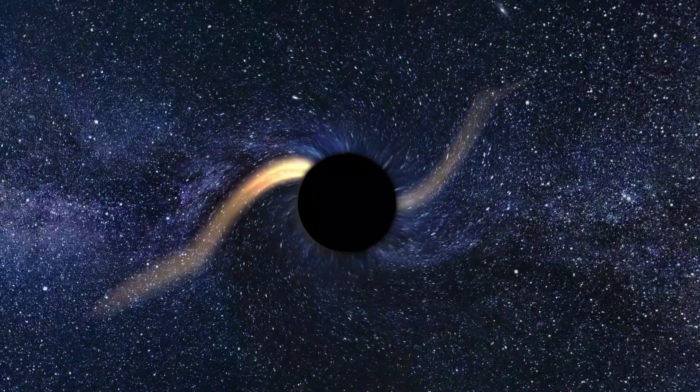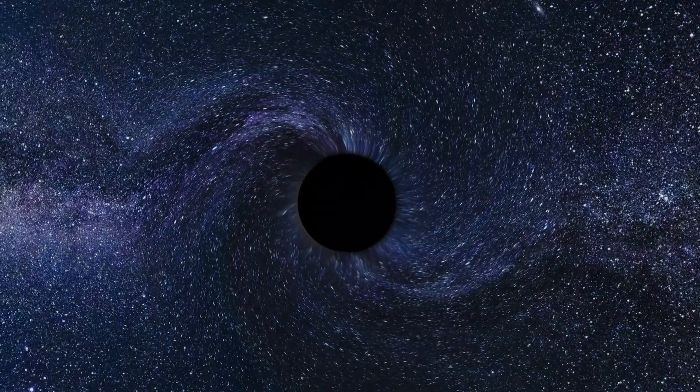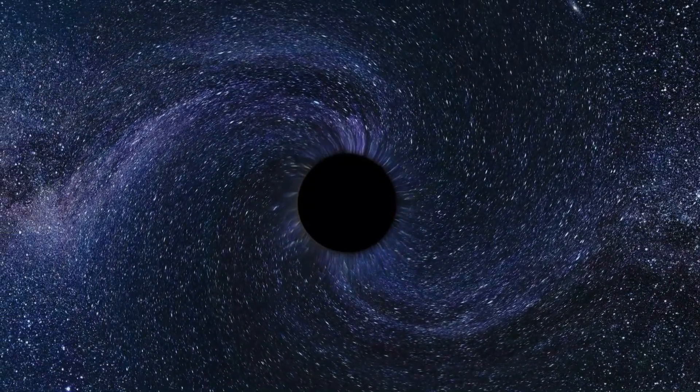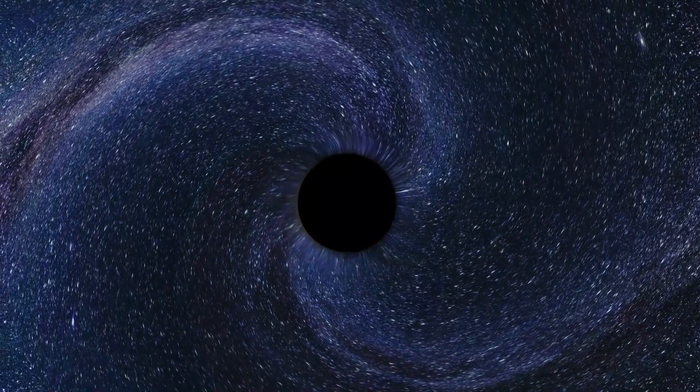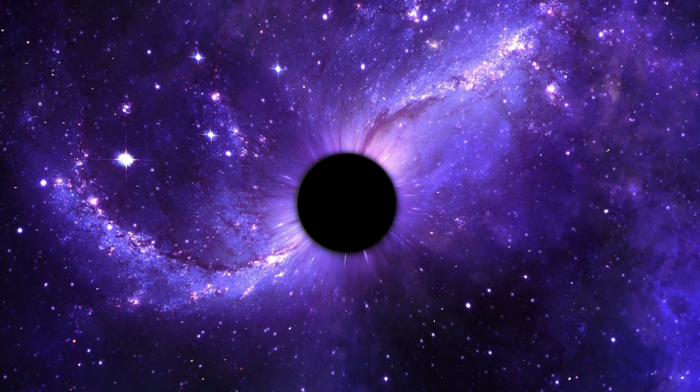Additionally, a small black hole entering our solar system could have a significant impact on the stability of our sun. As the black hole interacts with the sun's gravitational field, it could cause massive disruptions to the sun's activity, potentially triggering solar flares or other dangerous phenomena.